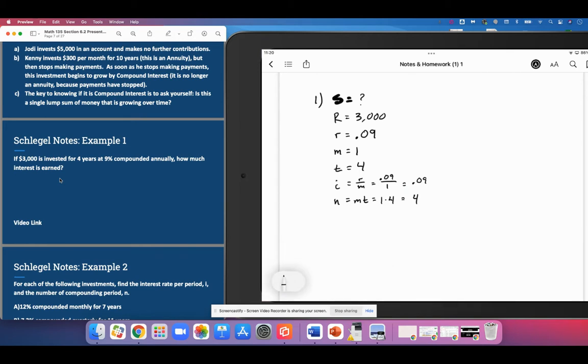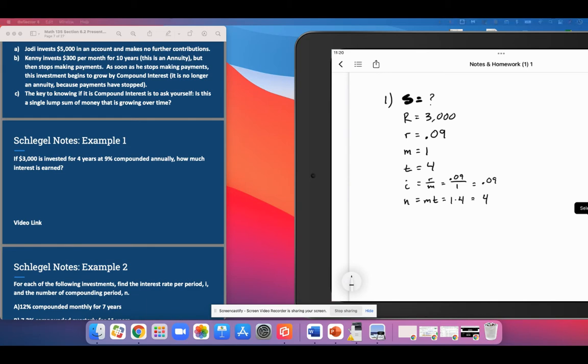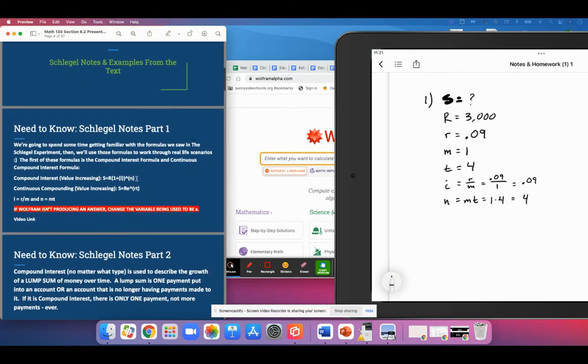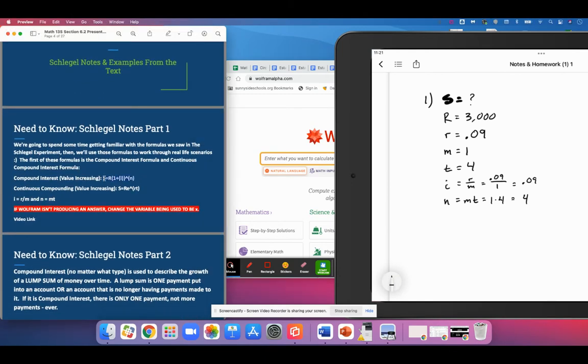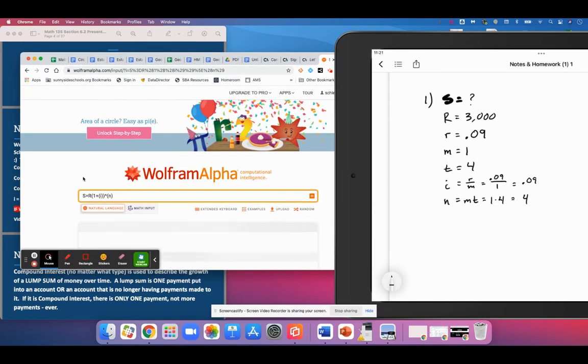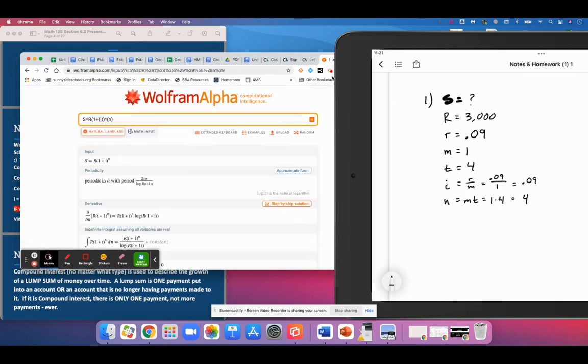So the formula for compound interest, if I was to go to Wolfram with this. The way I'm going to handle that is I'm going to come up and grab my compound interest formula, just copy it from here and paste it into Wolfram.